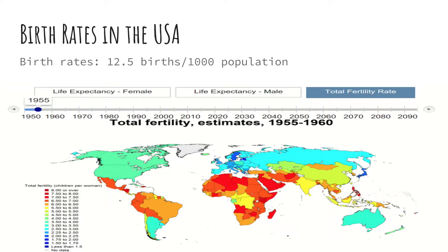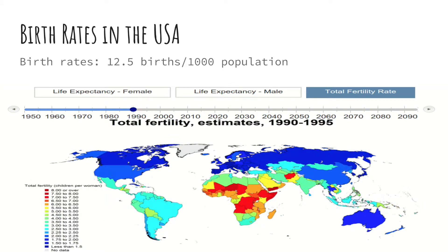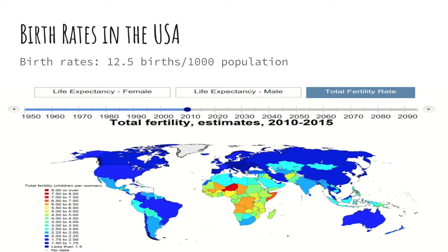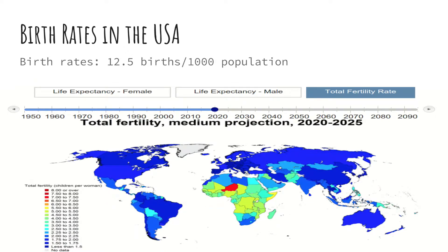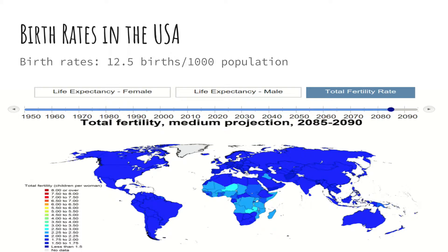Below is a GIF of the world, focusing on the US, from 1950 all the way to 2090. As you can see in the GIF, the USA starts around a 2.5 to 3 person birth rate in 1950, and quickly, within 20 years — by 1970 — goes down to about a 1.75 to 2 person birth rate, and according to future statistics, will stay that way until 2090.